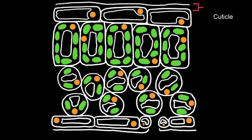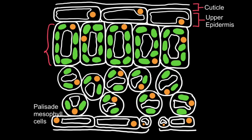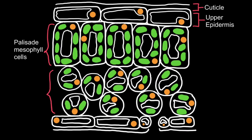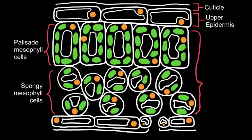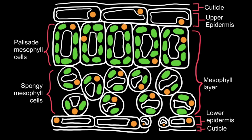The second kind of cell the IB wants you to look at are palisade mesophyll cells. First, it's useful to look at the structure of a leaf. In cross-section, at the very top there is a cuticle, below which is an upper epidermis. Beneath this is the mesophyll layer, comprising the palisade mesophyll cells and spongy mesophyll cells. Below that is a lower epidermis and cuticle, and also guard cells either side of a stoma.